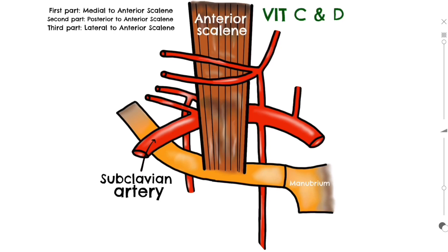Starting with the vertebral artery — this leaves the subclavian and travels straight up the cervical spine through the transverse foramina of the vertebrae. The vertebral arteries on both sides then travel up the neck and join to form the basilar artery, which is a vital component of the circle of Willis that supplies blood to the brain.